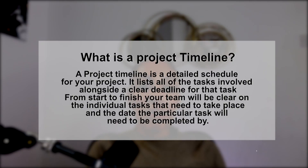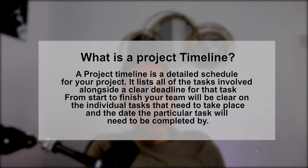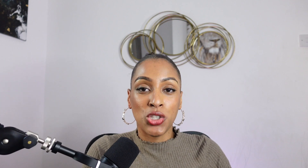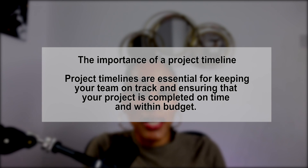So what is a project timeline? A project timeline is a detailed schedule for your project. It lists out all of the tasks involved along with a clear deadline for that specific task. From start to finish, your team will be clear on their individual tasks and the date that each task needs to be completed by. Project timelines are essential for keeping your team on track and ensuring that your project is completed on time and within budget. There is no way that you can manage a project without a project timeline — it is essential for the smooth running of a project.